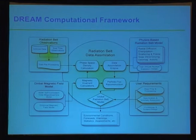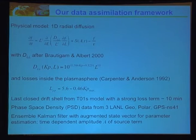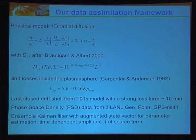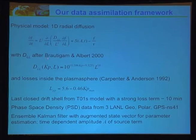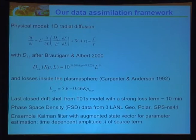Right now in our DREAM project, we have a simple physical model: a one-dimensional radial diffusion model, where S is the source term, DL is the diffusion coefficient, and f is the phase-space density as a function of three adiabatic invariant variables — gyration, bounce motion, and drift motion. The diffusion coefficient is modeled after Brautigam and Albert 2000, and losses inside the plasmasphere use the work from Carpenter and Anderson 1992, given by the index LPP. It gets data from three satellites: LANL-GEO, Polar, and GPS-NS41.